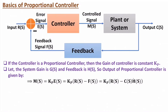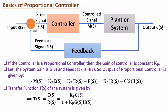If you want to calculate the total transfer function, that is output C(s) divided by input R(s). As per negative feedback, the gain is the forward gain divided by 1 plus the total gain times the feedback gain. Here the total gain is Kp·G(s) and the feedback gain is H(s). So the transfer function will be Kp·G(s) divided by 1 + Kp·G(s)·H(s).